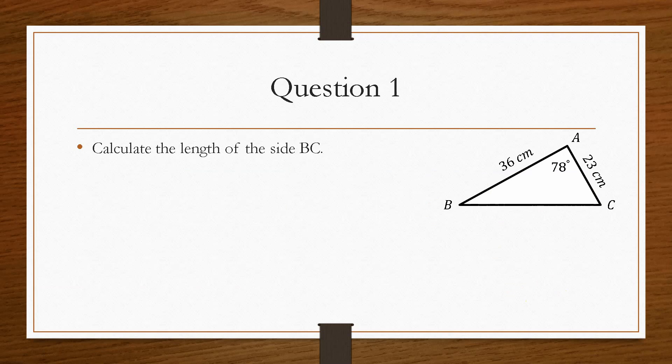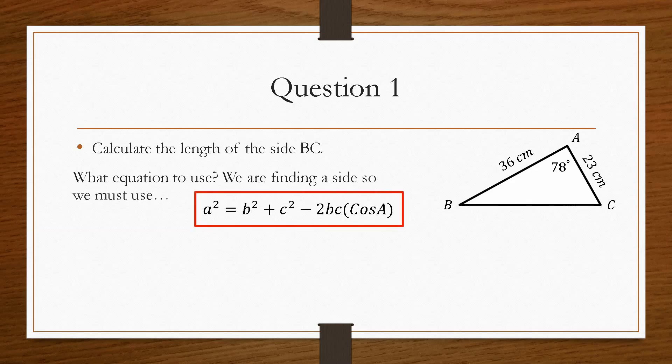So we have a look at question number one. It says, calculate the length of the side BC. So BC is this side here. So we need to work out which equation we're going to use. And we're trying to find a length. So we must use this one here. Now, the more informal way of remembering this is if you have an angle sandwiched between two sides, you use the cosine rule, and it is this one here. We have an angle sandwiched between two known sides.